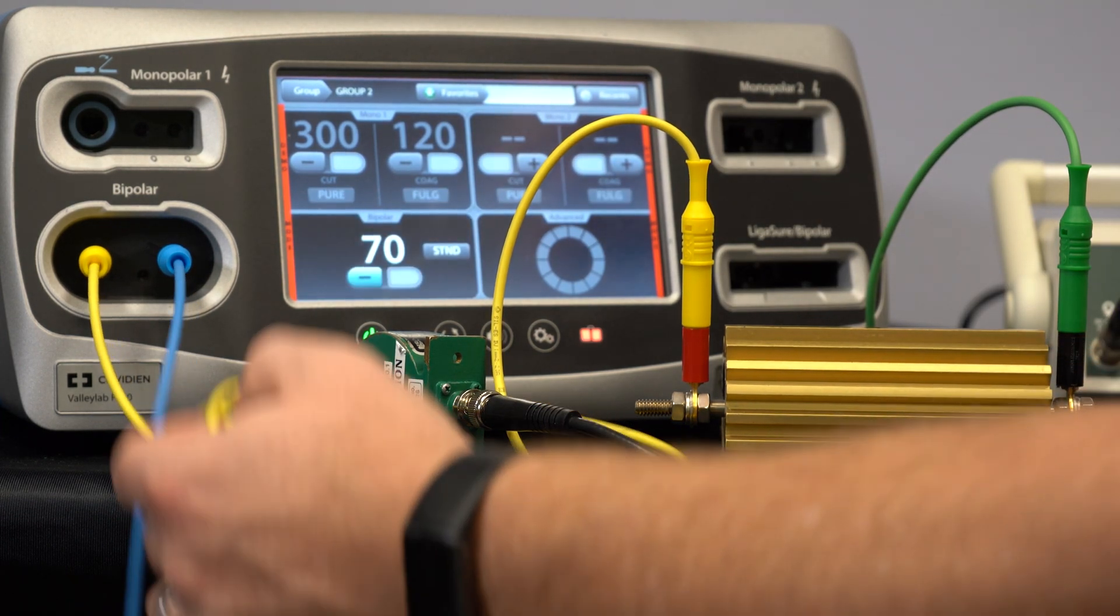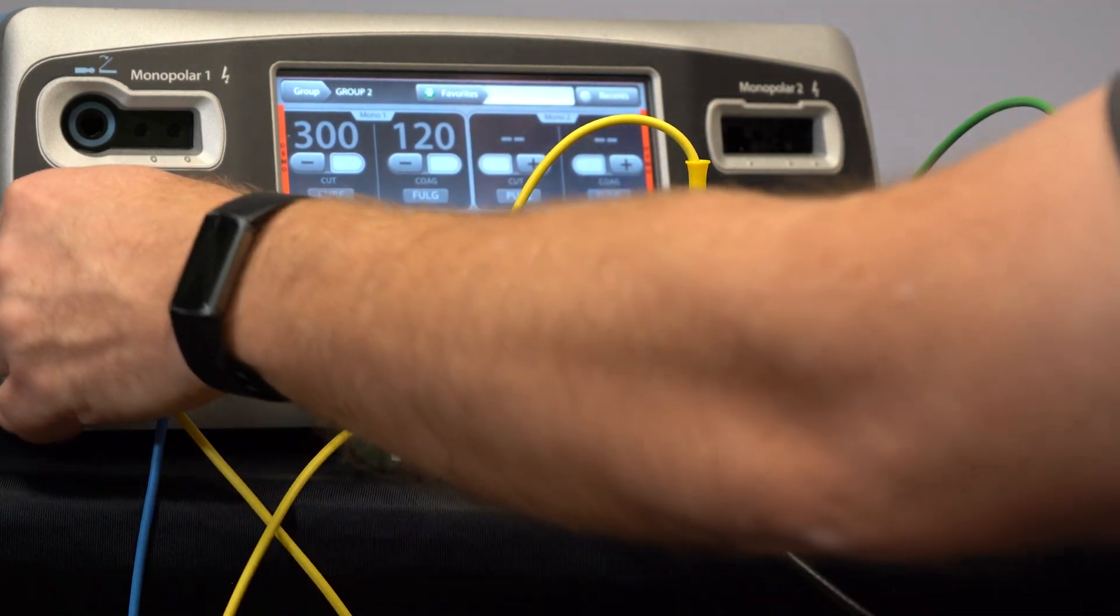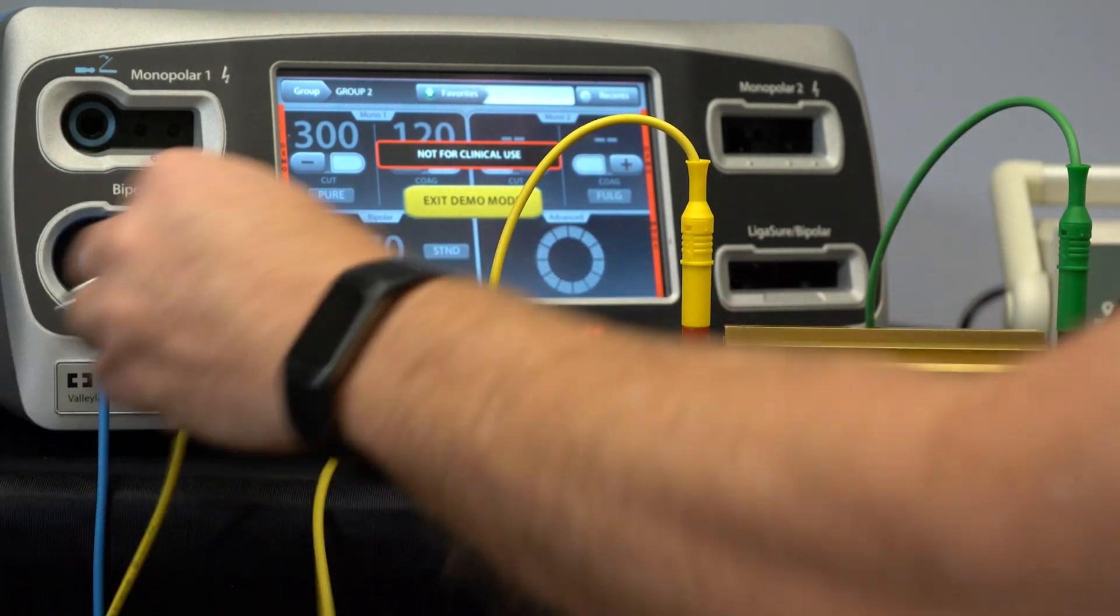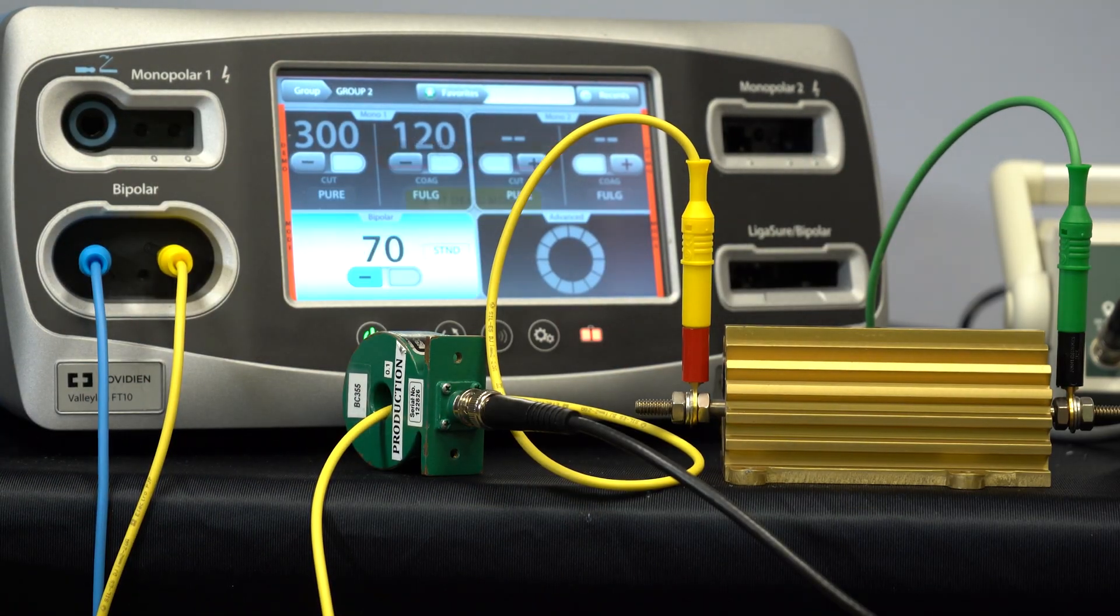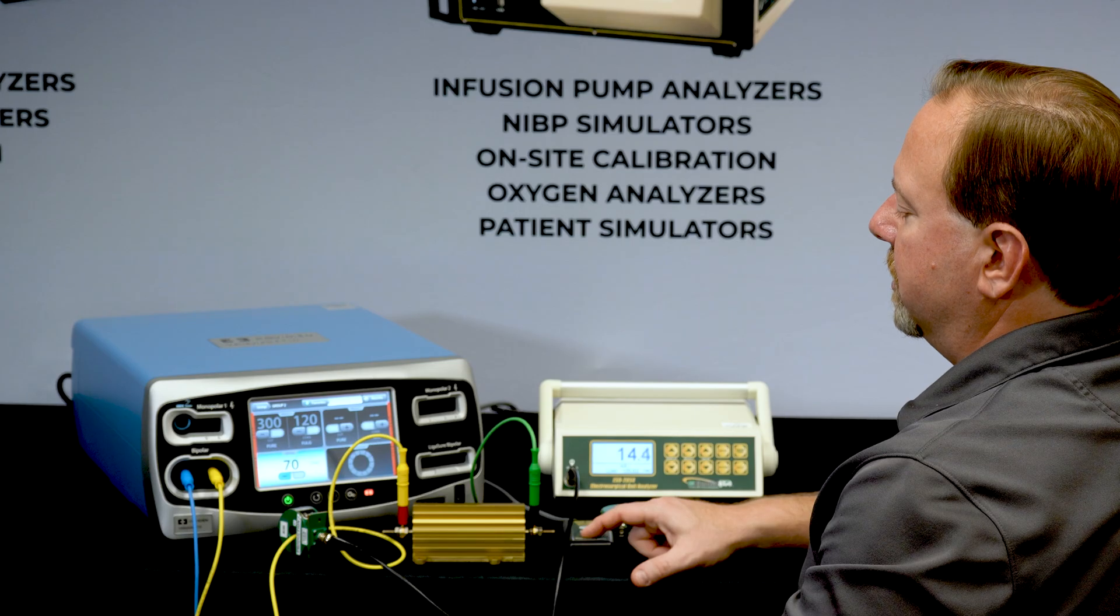And we're measuring from the active port through the load to earth ground. Now for bipolar they ask you to test both ports independently. So we would also go and test the other port and make sure that has a safe leakage to it.